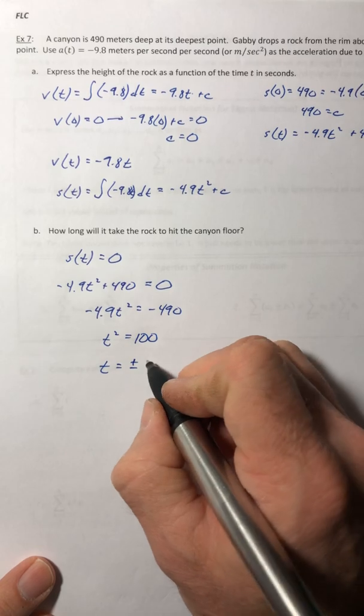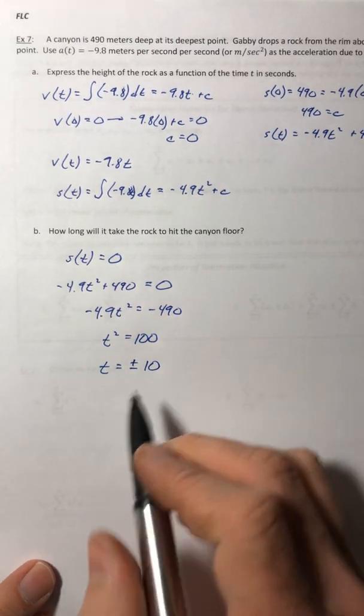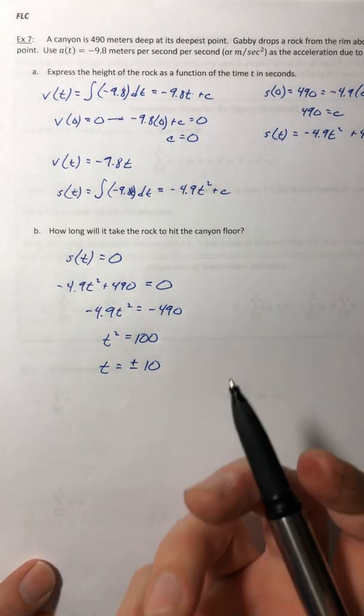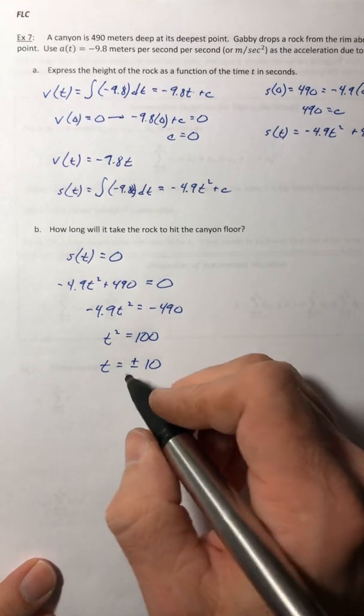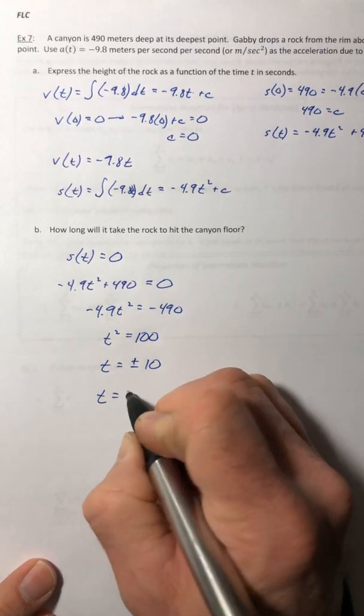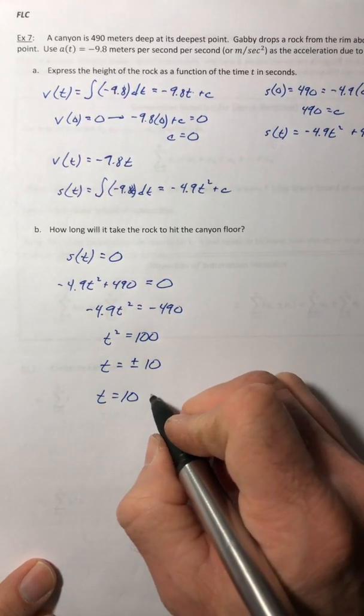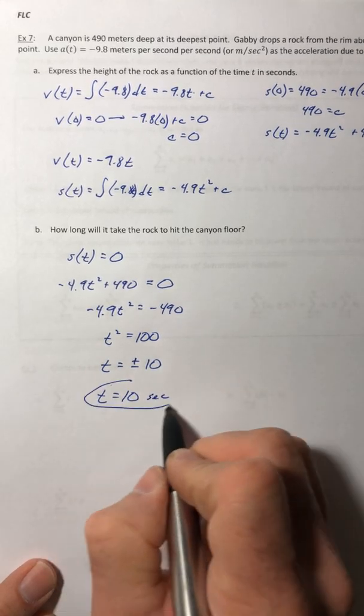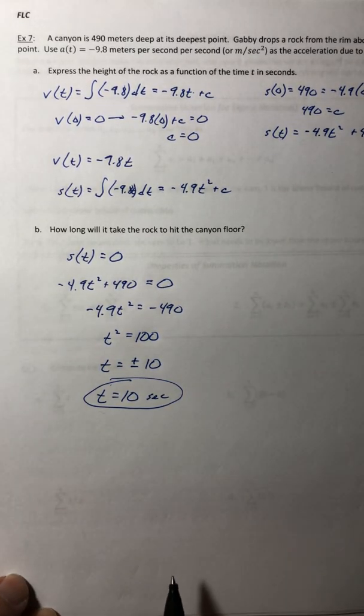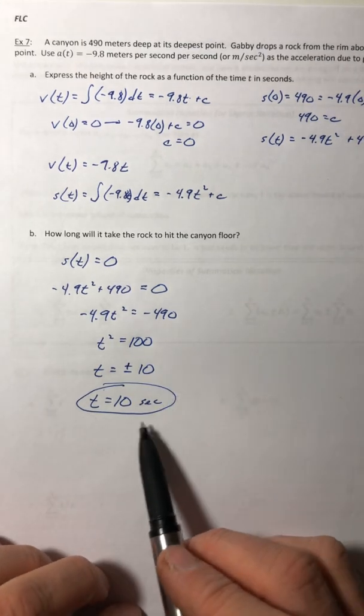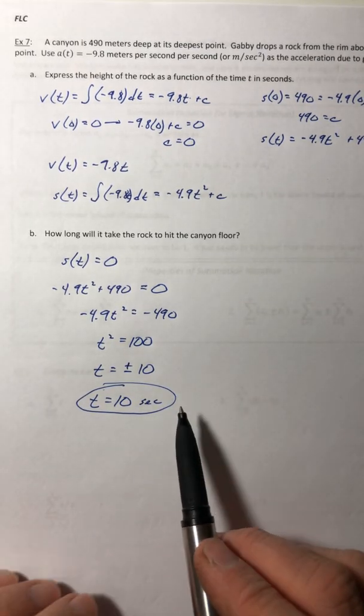So square root both sides. And remember when you square root, the plus or minus gets tacked on. But in this case, because we're working with time, time can't be negative. So just 10 seconds. So when she drops it, it's going to take 10 seconds to hit the ground.